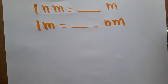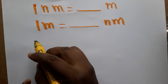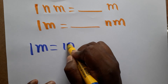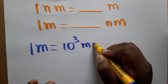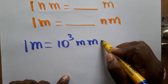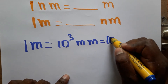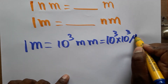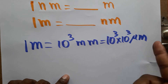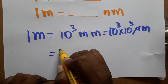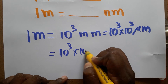One meter equals 1000 millimeters, that is 10³ millimeters. One millimeter is 1000 micrometers, so we can write 10³ × 10³ micrometers. And one micrometer is 10³ nanometers. So we have 10³ × 10³ × 10³ nanometers.